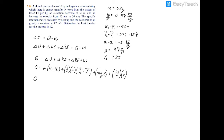Plugging in values: Q equals 10 kilograms times negative 5 kilojoules per kilogram for the internal energy term. We must ensure that internal energy, kinetic energy, potential energy, and work are all in kilojoules before adding them. For internal energy, the kilograms cancel and we're left with kilojoules, so that term works out.